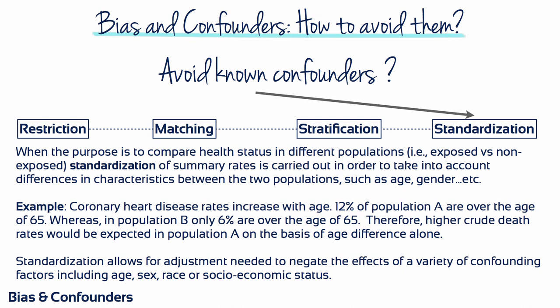When the purpose of a study is to compare health status in different populations, i.e. exposed versus non-exposed, standardisation of summary rates is carried out in order to take into account differences in characteristics between the two populations, such as age or gender. For example, coronary heart disease rates increase with age. If 12% of population A are over the age of 65, whereas in population B only 6% are over the age of 65, higher crude death rates would be expected in population A on the basis of age difference alone. Standardisation allows for adjustment needed to negate the effects of a variety of confounding factors, including age, sex, race or socioeconomic status.